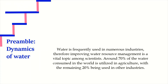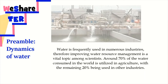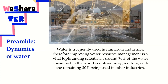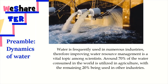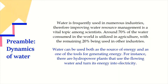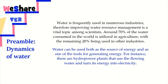Water is frequently used in numerous industries; therefore, improving water resource management is a vital topic among scientists. Around 70% of the water consumed in the world is utilized in agriculture, with the remaining 20% being used in other industries. Water can be used both as a source of energy and as a tool for generating energy — for instance, in hydropower plants that use flowing water and turn its energy into electricity.